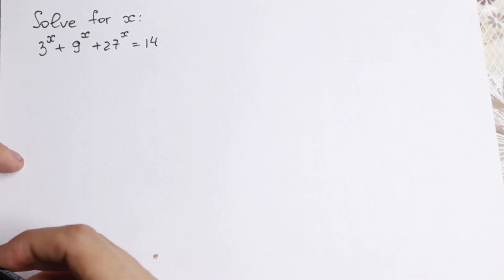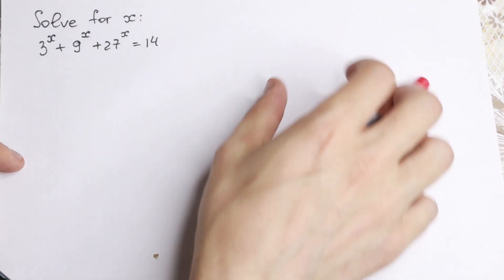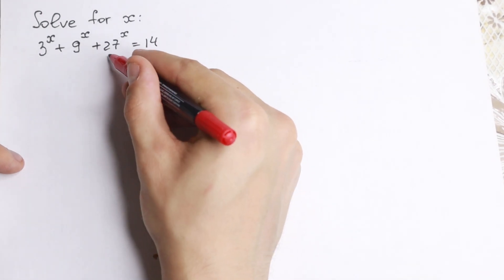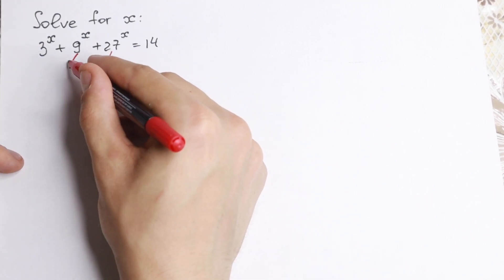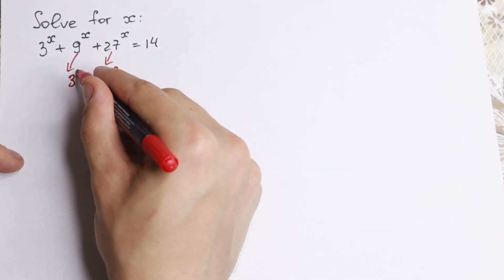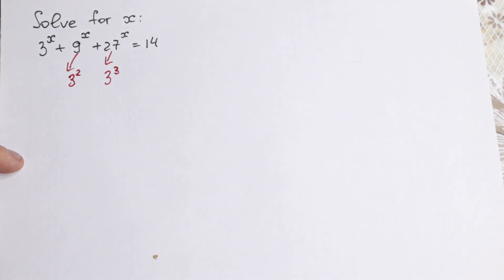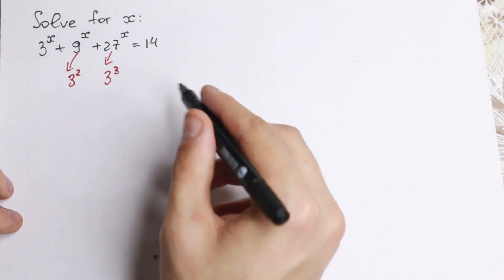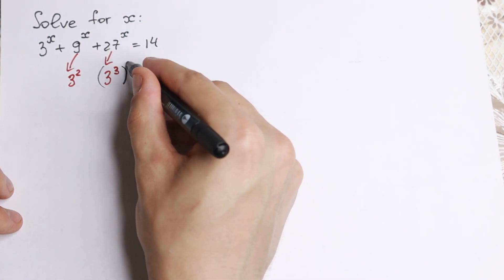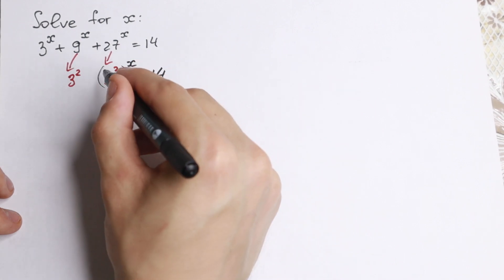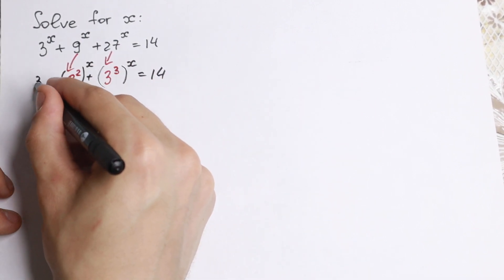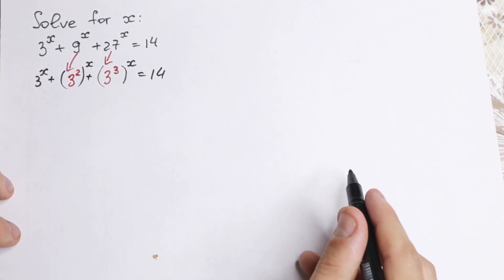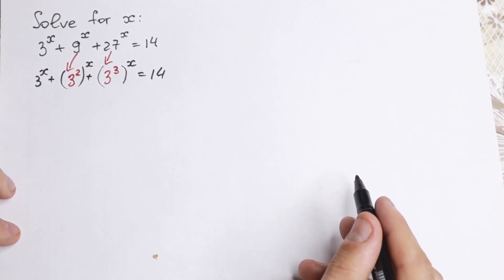I hope you see that 9 and 27 are really good numbers because we can easily rewrite them. This 27 is 3 cube, and this 9 is 3 square. So we can rewrite the equation: 3 to the x, plus 3 square to the x, plus 3 cube to the x, equal to 14.